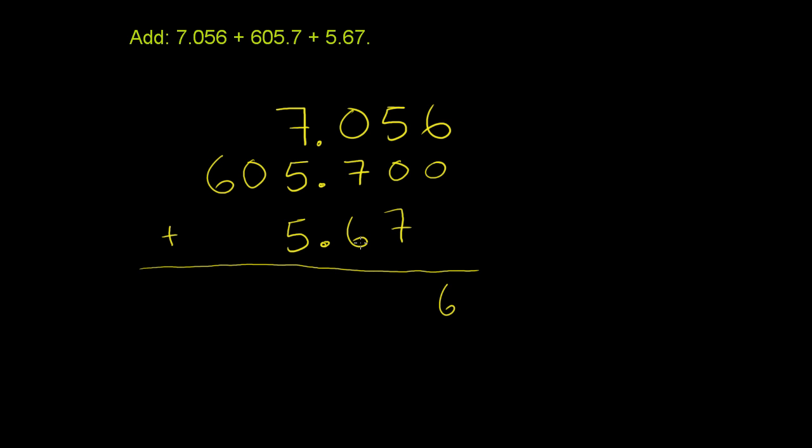You can also do it here. This 5.67 you could write it as 5.670. And when you write it like this you have 6 plus 0 plus 0 is 6. And you keep going.